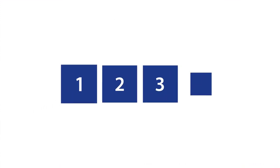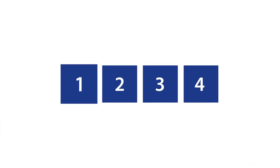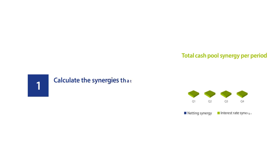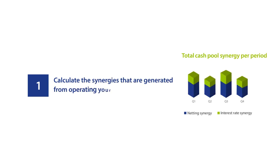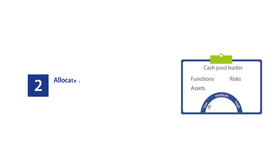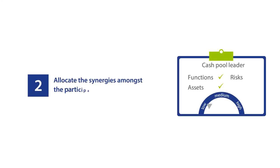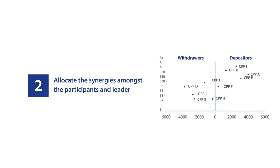Here's how you reach compliance in four simple steps. Calculate the synergies that are generated from running your cash pool or in-house bank. Determine the functional profile of the cash pool leader and allocate the synergies amongst the participants.